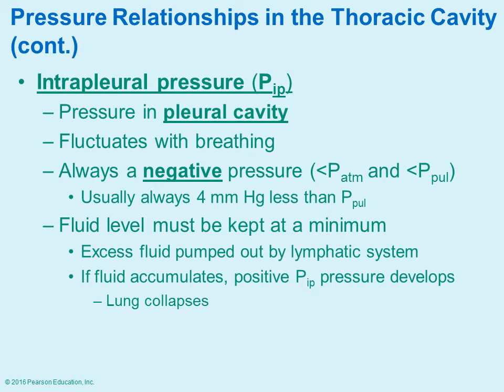Intrapleural pressure is always going to be less than the pulmonary pressure and less than atmospheric pressure. You want fluid in that cavity to be kept at a very low minimum. If fluid does start to accumulate there, the pressure in the pleural cavity — this intrapleural pressure — would start to increase. The end result is that you would have a collapsed lung.